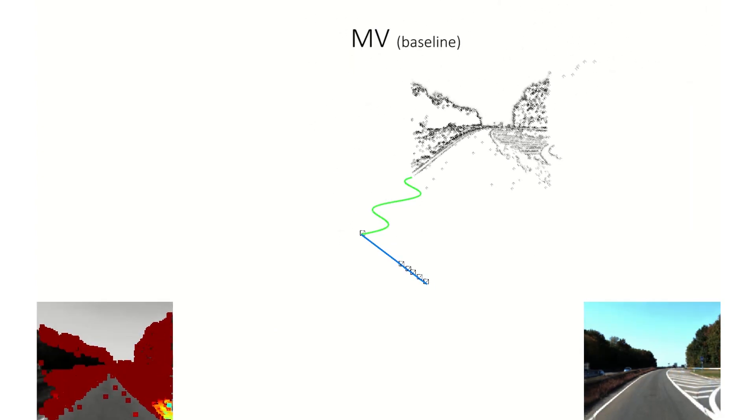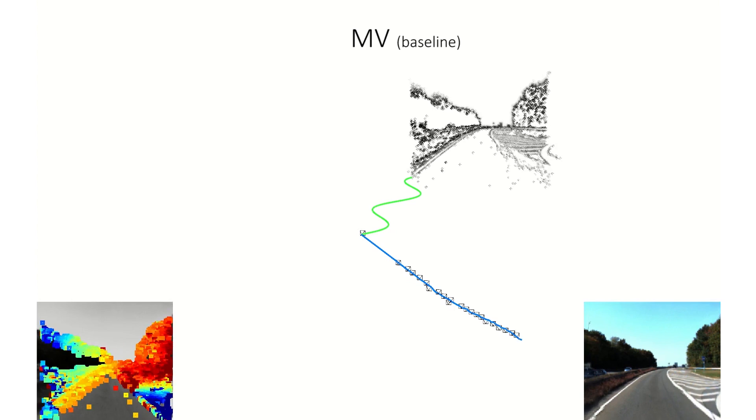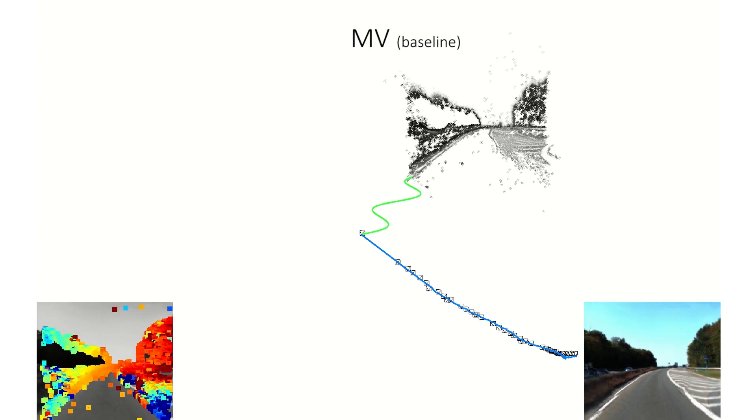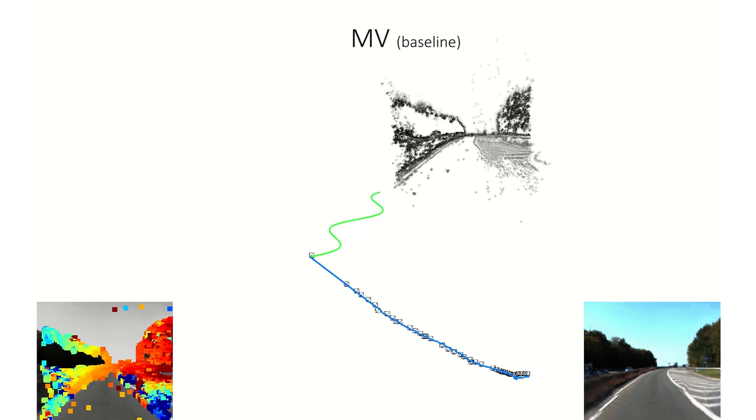views generated with a state-of-the-art flow-based method lead to mostly straight motion. While the baseline produces distorted images, our method produces images that are sharper and more realistic.